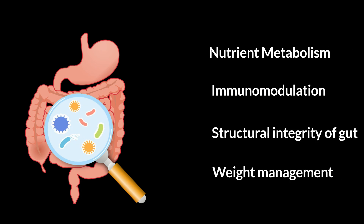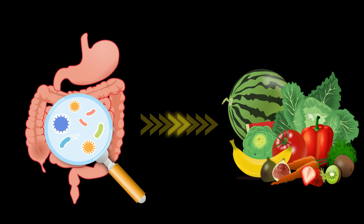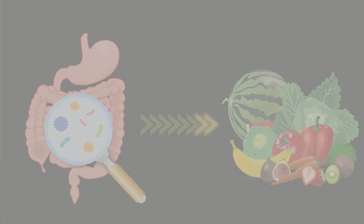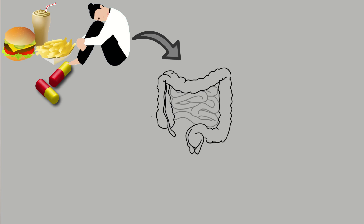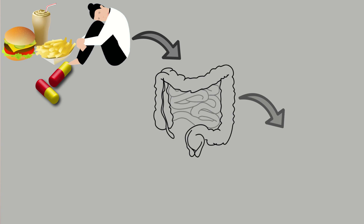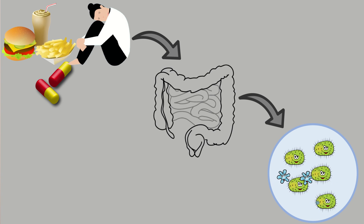In return for all these amazing roles that our gut microbiota plays, it expects a good environment and good nutrition that allow it to thrive and grow. In cases of poor dietary or lifestyle habits, excess stress or excess use of medications, the balance in our gut microbiota shifts, wherein there is a rise in the number of bad or pathogenic bacteria in the gut while the number of good bacteria goes down. It is this shift in microbiome that causes us to experience various signs and symptoms.